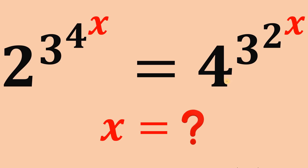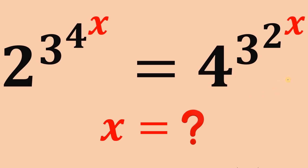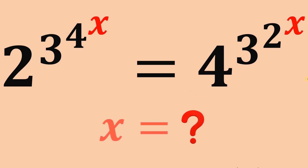If 2 raised to the power of 3, raised to the power of 4, raised to the power of x equals 4 raised to the power of 3, raised to the power of 2, raised to the power of x, then what is the value of x? Pause the video right now and try it yourself. Here's the solution.